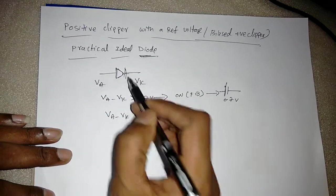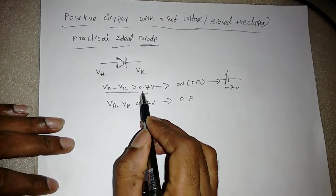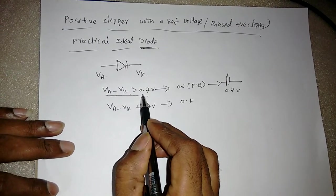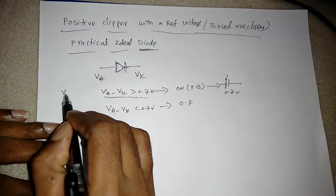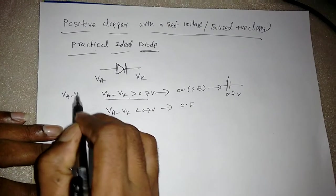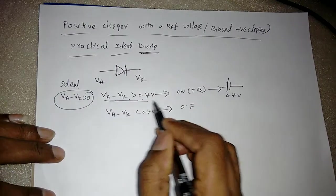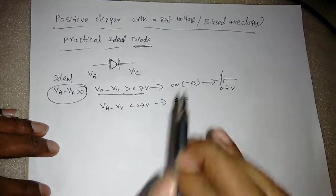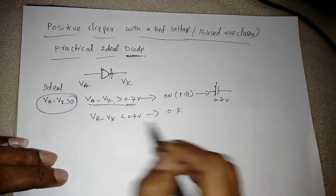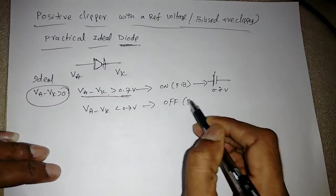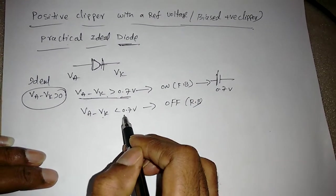For the practical condition, VA minus VK should be greater than 0.7V. For the ideal case it should simply be greater than 0. For the reverse bias or off condition, VA minus VK is less than 0.7V if it is a silicon diode.